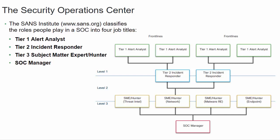The CCNA CyberOps certification prepares you for an entry-level job in a security operations center, basically something like a Tier 1 alert analyst — a person who monitors the network and responds to alerts. It's their job to verify whether an alert is genuine or a false positive. If it is genuine, they might send that ticket up to a Tier 2 incident responder, and from there it may go to a subject matter expert or threat hunter who knows more about malware or reverse engineering malware, with specialized job roles at that level.